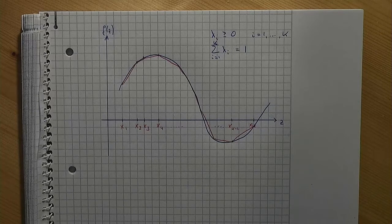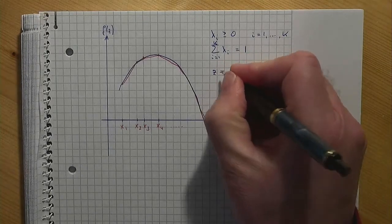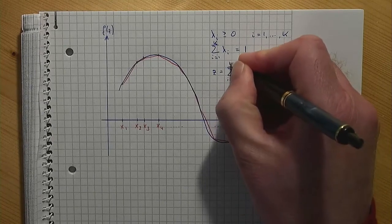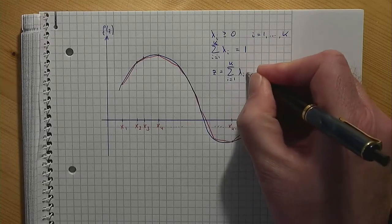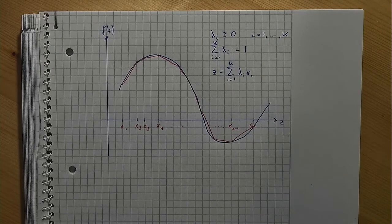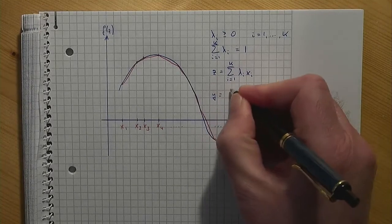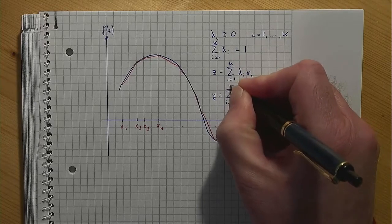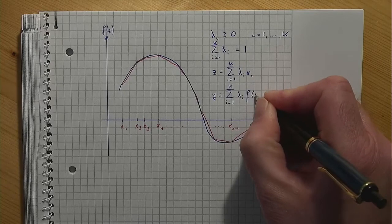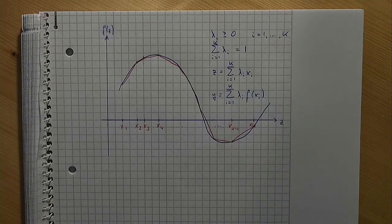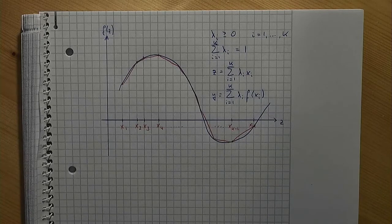Any value z between the smallest and the largest breakpoint can now be expressed by choosing appropriate weights. The same technique can be applied to the function values that relate to the breakpoints. Let y be a new real-valued decision variable. After introducing the decision variables lambda and the associated constraints, y can now be used to replace the nonlinear function f. Note that the expression that defines y is linear, and so are the other constraints.